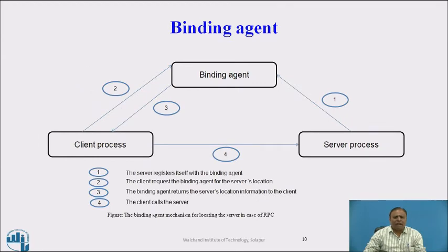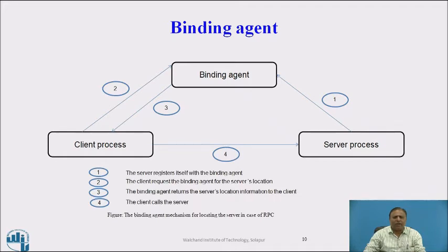This diagram illustrates the binding agent mechanism for locating the server in a remote procedure call. There are three components: binding agent, server process, and client process. There are four steps. In the first step, the server registers itself with the binding agent. In the second step, the client requests the binding agent for the server's location. In the third step, the binding agent returns the server's location information to the client. In the fourth step, the client calls the server. In this way, a connection is established between the client process and the server process.